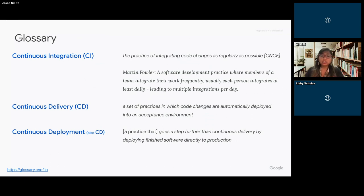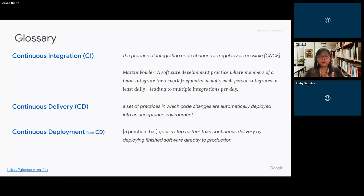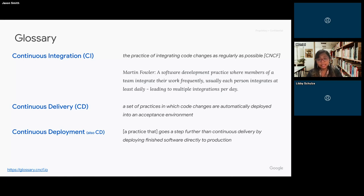We're focusing on the second half of the CI/CD pipeline. Continuous delivery takes changes and code created in the inner development loop and deploys them into your environment where you can see and test the application running. A step further, continuous deployment takes that software and creates methods and processes to run it into production.